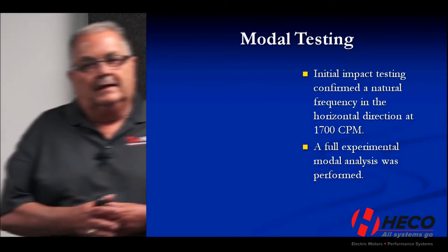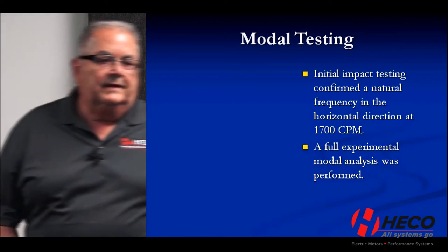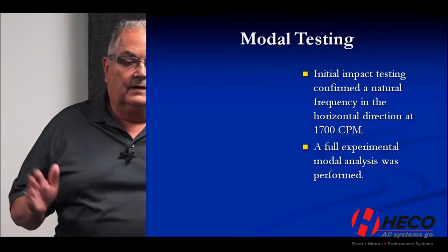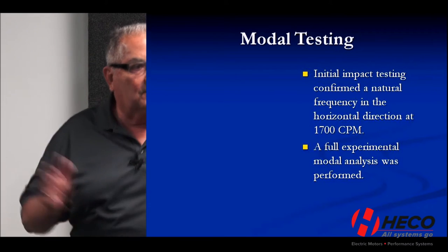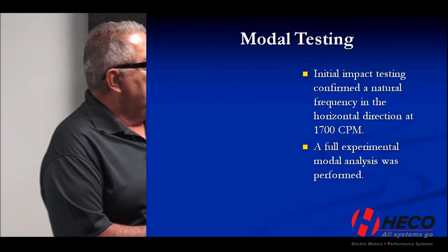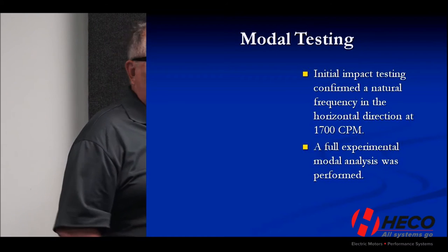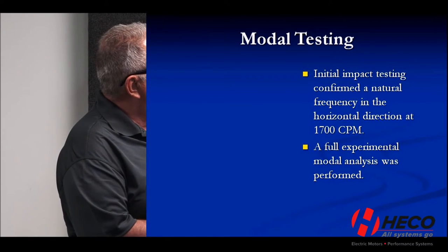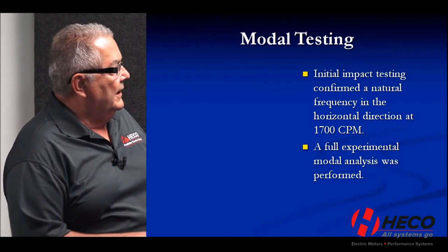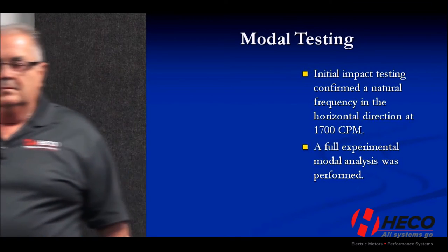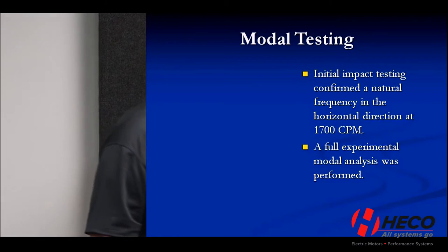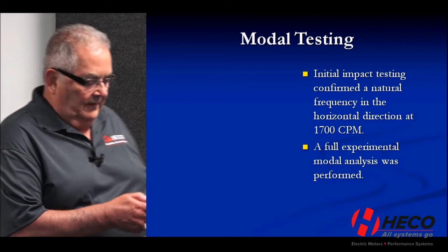Next we did impact testing. Impact testing is like playing Viking — you get a battering ram, hit the fan structure, and measure what frequency it vibrates at, like a tuning fork. We hit it once and measure that frequency. We found a natural frequency at 1,700 cycles per minute — very good correlation with the 1,691 CPM we saw in the coast-down test. The hammer test and the coast-down test agreed well.